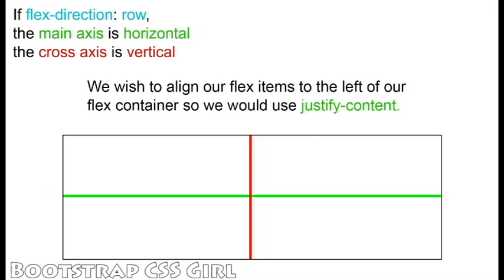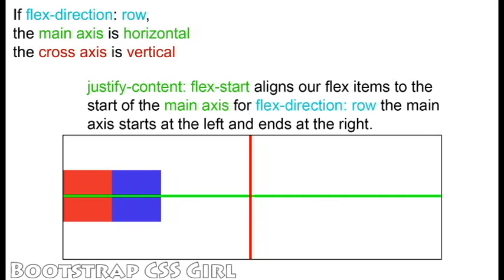Our FlexDirection is set to Row, and we would like to align our FlexItems to the left of our container, so we will use the JustifyContent property. To align our FlexItems to the left, we set JustifyContent to FlexStart. This moves our FlexItems to the start of our main axis. With FlexDirection set to Row, the main axis starts at the left and ends at the right.